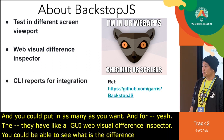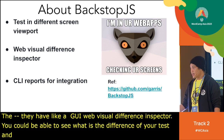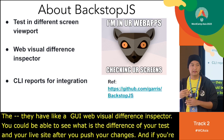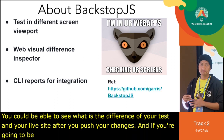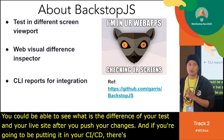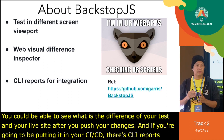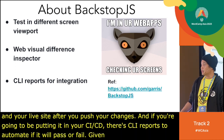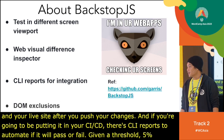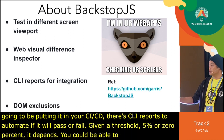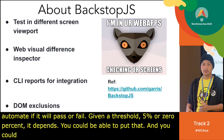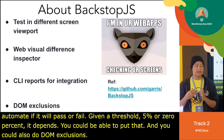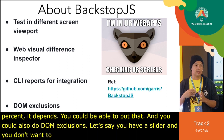When putting BackstopJS in your CI/CD pipeline, it provides CLI reports so you can automate pass/fail based on a specific threshold, like a 5% or 0% difference. You can also configure exclusions — for example, if you have a slider you don't want tested, you can exclude it from the comparison.